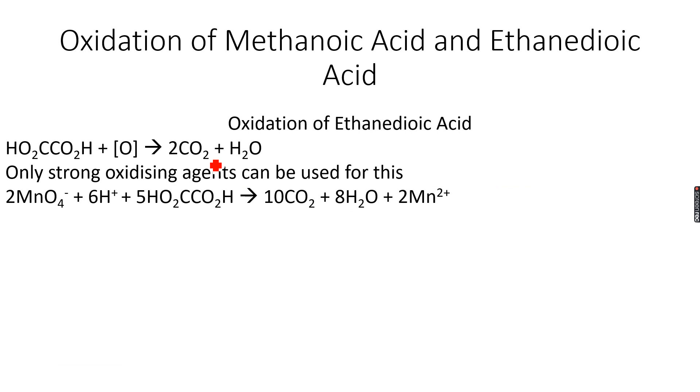So we have ethanedioic acid over here. So let me just first draw the structure very quickly of ethanedioic acid. This is ethanedioic acid. The eth comes from the two carbon atoms and there are two acid groups, obviously it's a dioic acid. So it becomes ethanedioic acid and it can also oxidize. There are only two carboxylic acids which oxidize and these are those two.